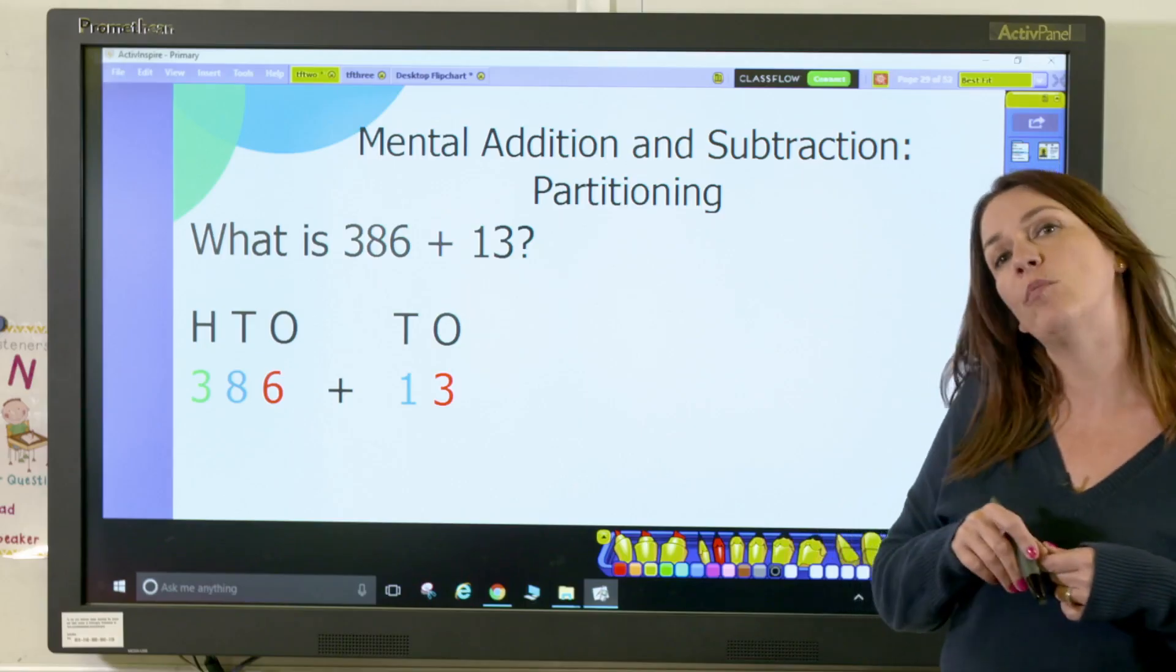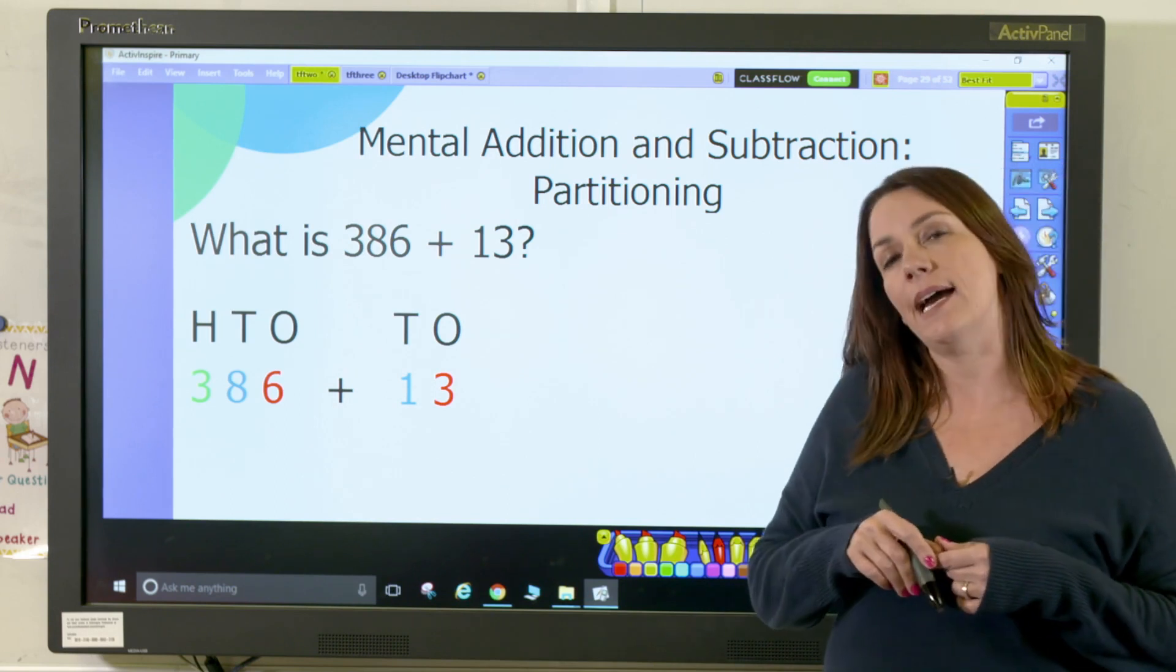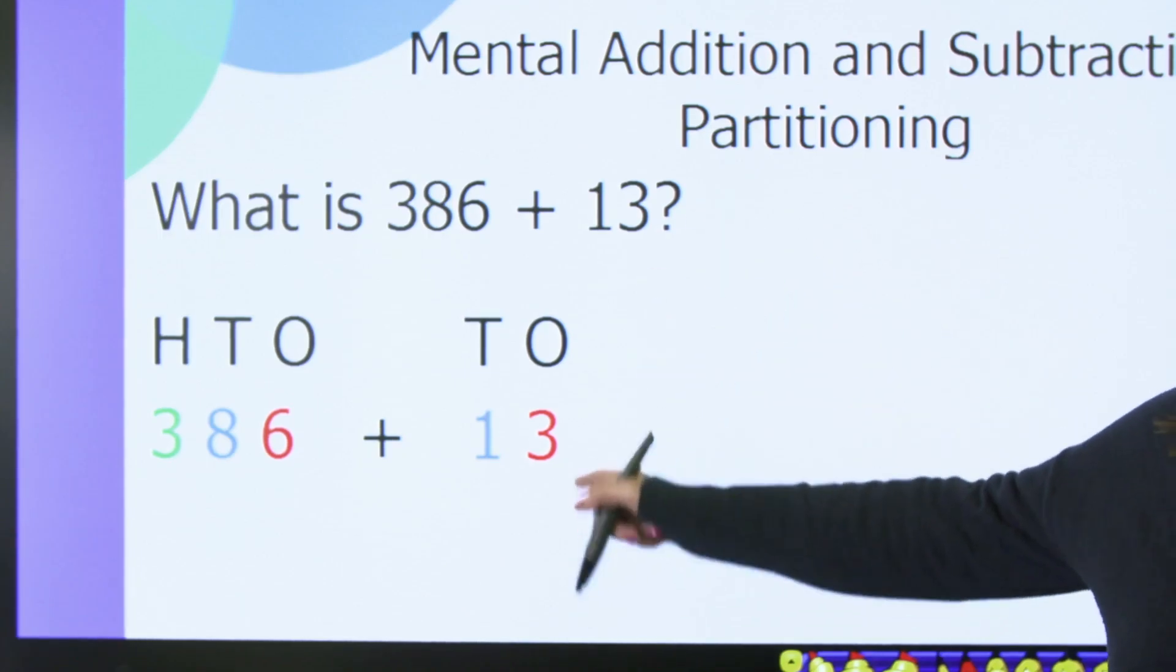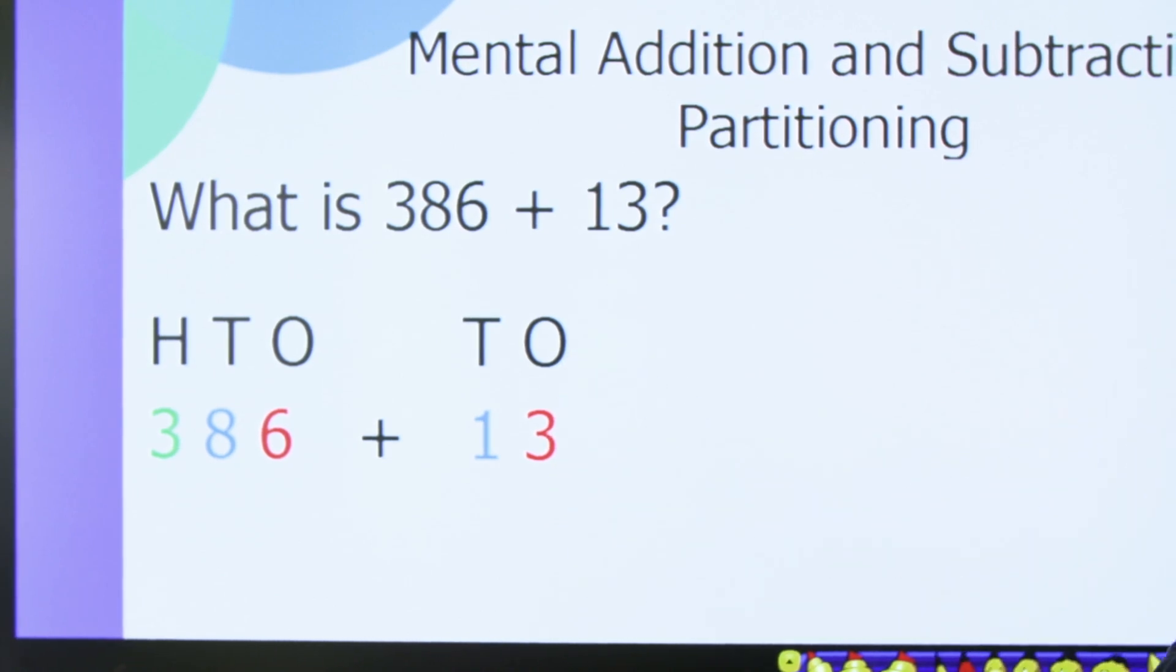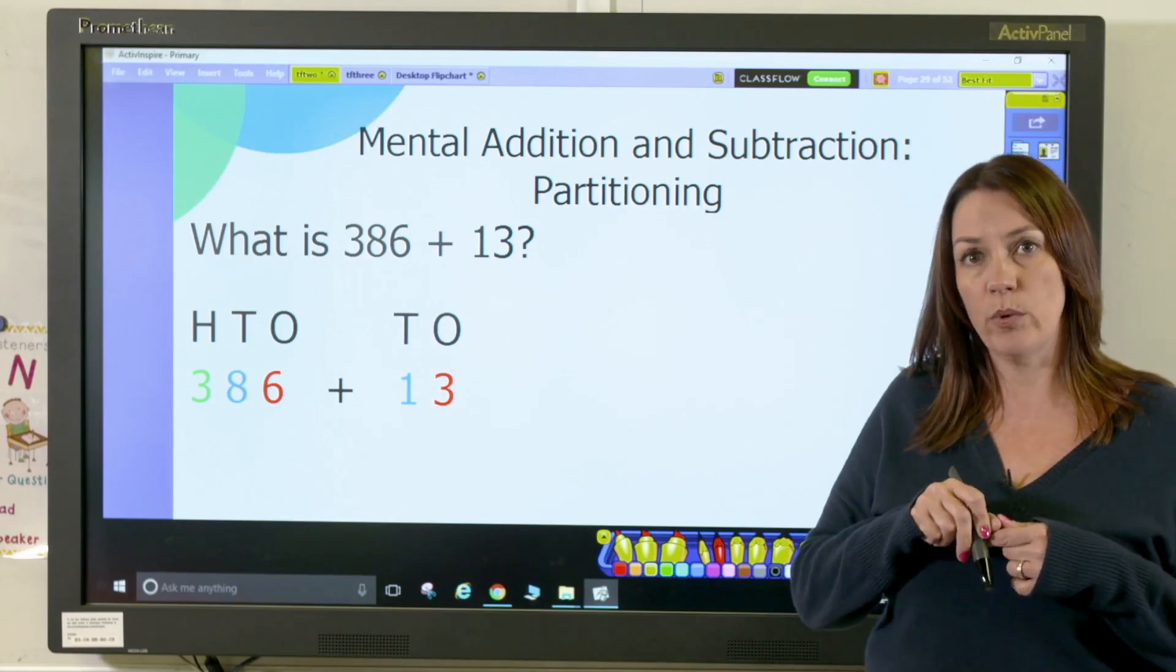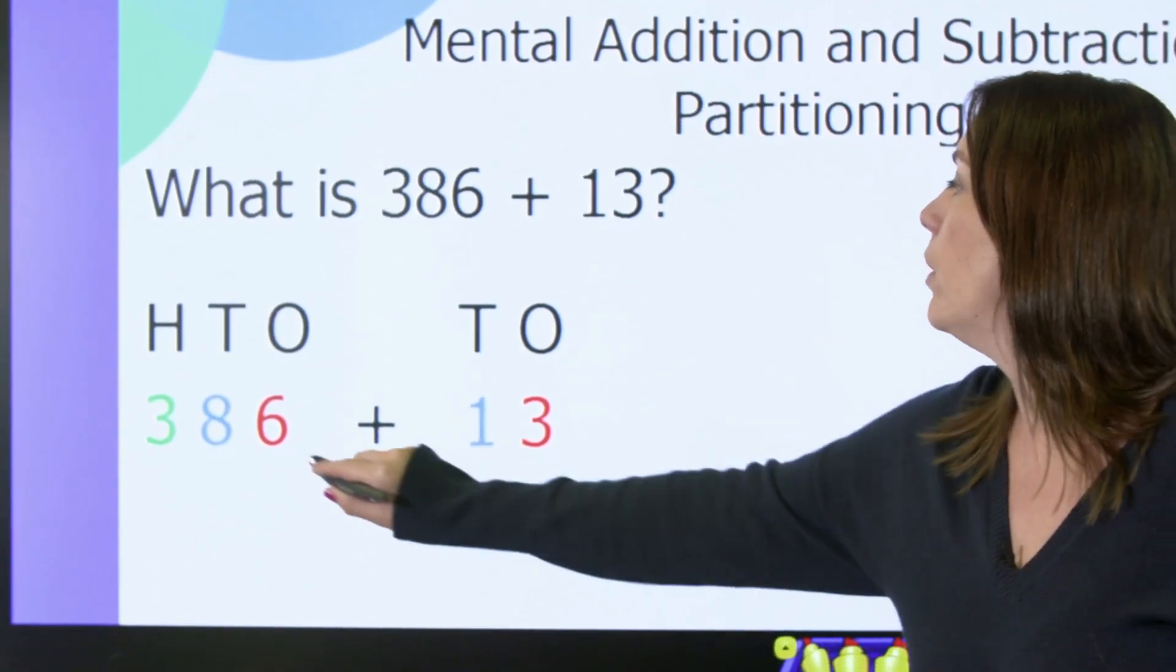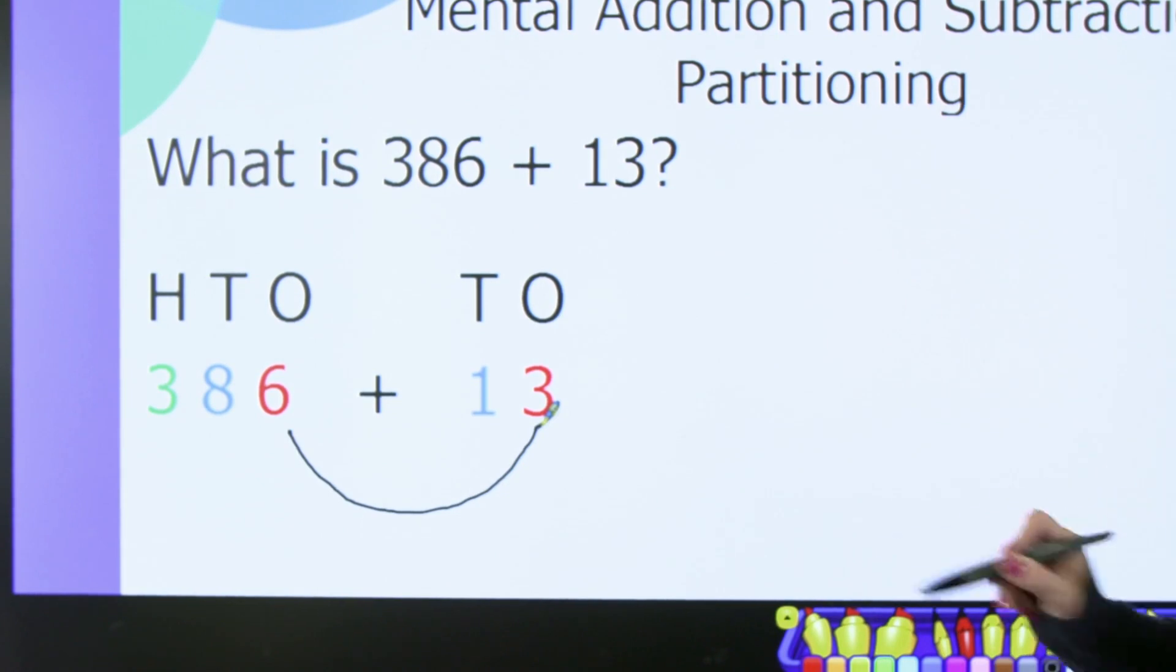So let's have a look at a problem. Here we have 386 add 13. Now I know I can do this mentally because the numbers in each column for place value will never go over 10, so I'm going to start with my ones column. So I have 13, I'm going to add three ones to six which will give me nine.